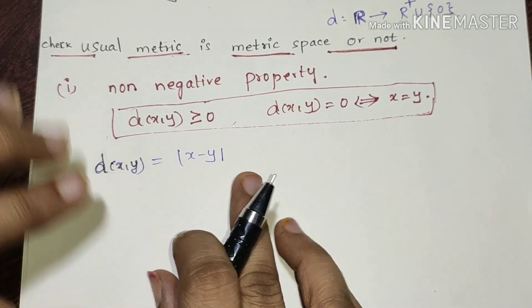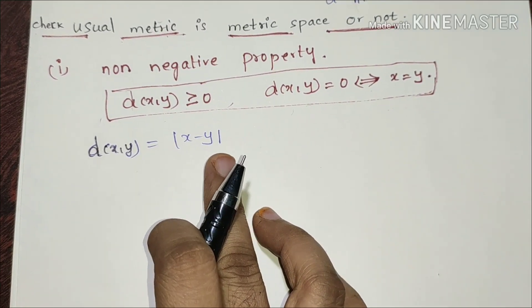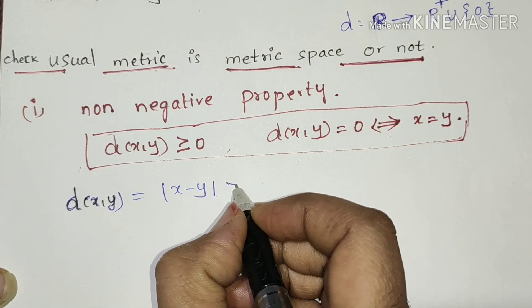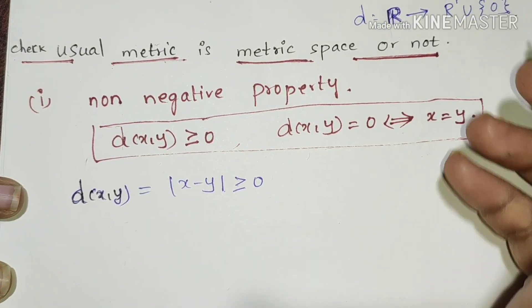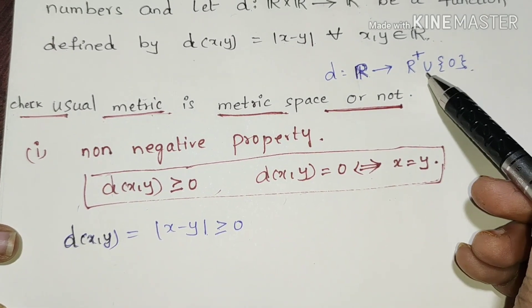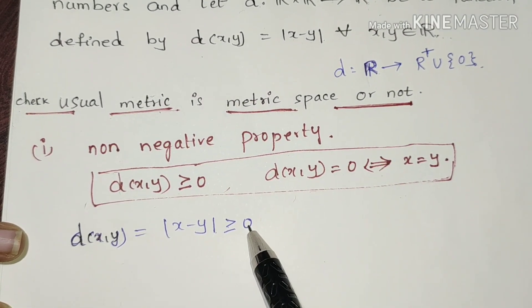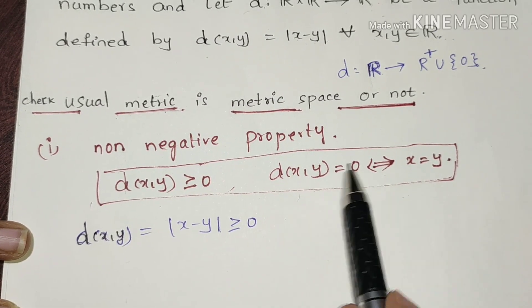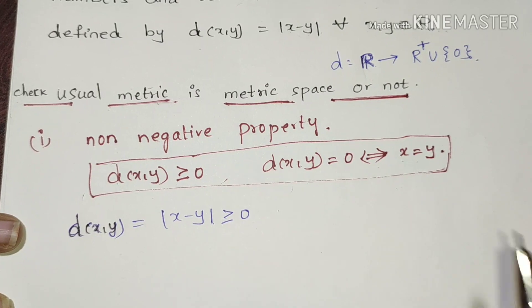So, we will satisfy the non-negative properties. By definition, we will satisfy the first condition. We have to map real numbers to positive real numbers. This condition will automatically exist, and we will verify the equal to zero condition.